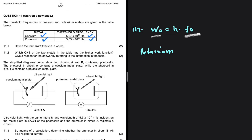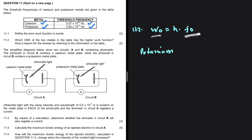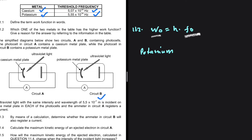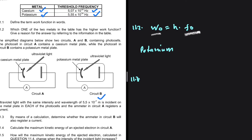For question 11.3, we are given two simplified diagrams showing circuits A and B containing photocells. Circuit A has a cesium metal plate and circuit B has a potassium metal plate. Ultraviolet light with the same intensity and wavelength 5.5 × 10⁻⁷ m is incident on both plates, and the ammeter in circuit A registers a current, which tells us that photoelectrons have been emitted. We need to determine whether the ammeter in circuit B will also register a current. A current is registered when electrons are emitted, and the prerequisite for that is that the incident frequency must be greater than the threshold frequency.